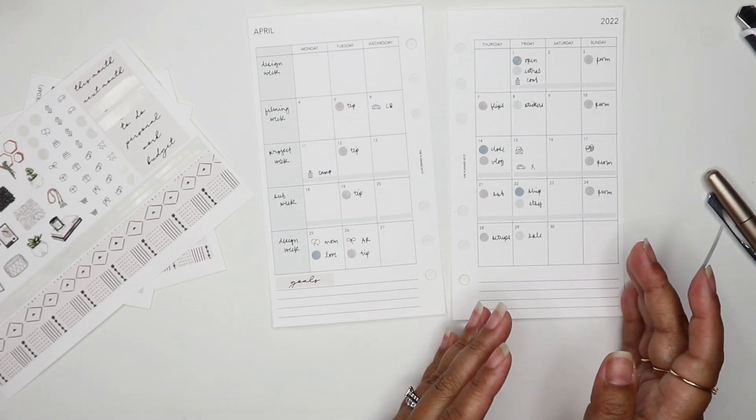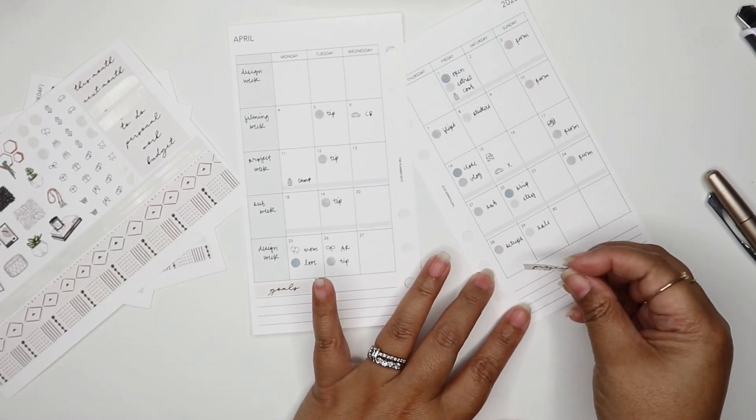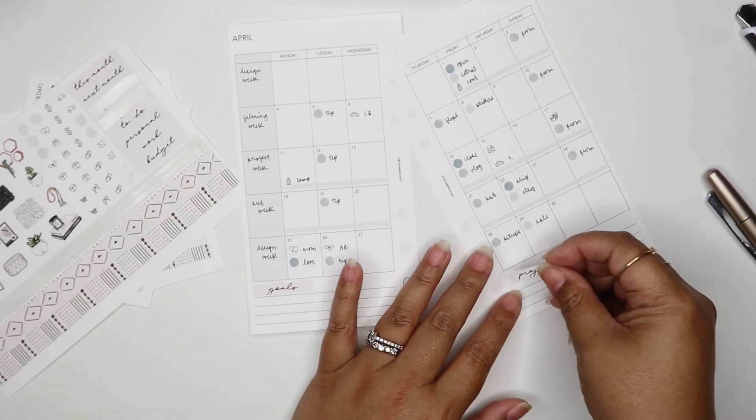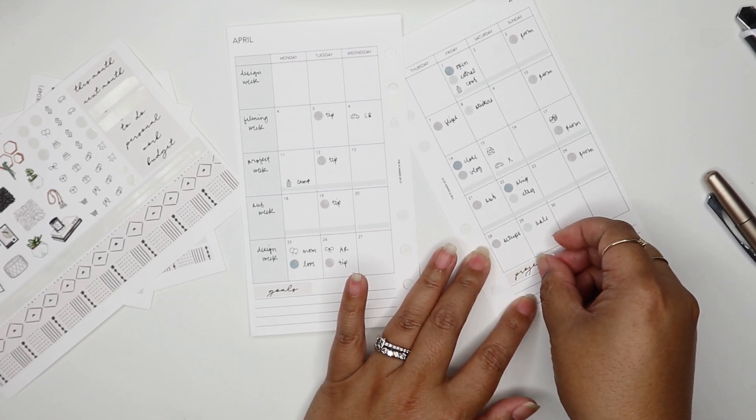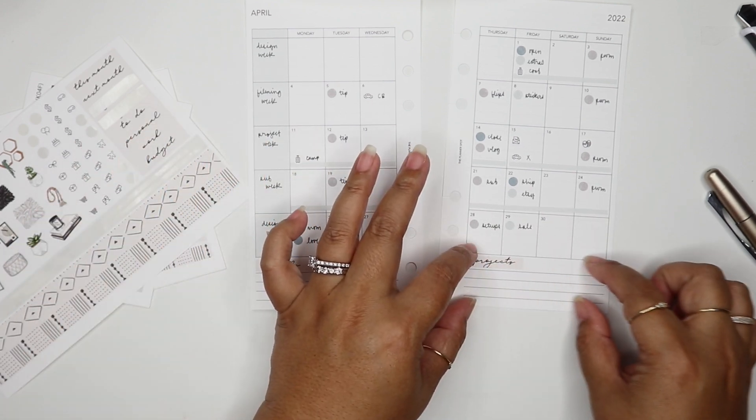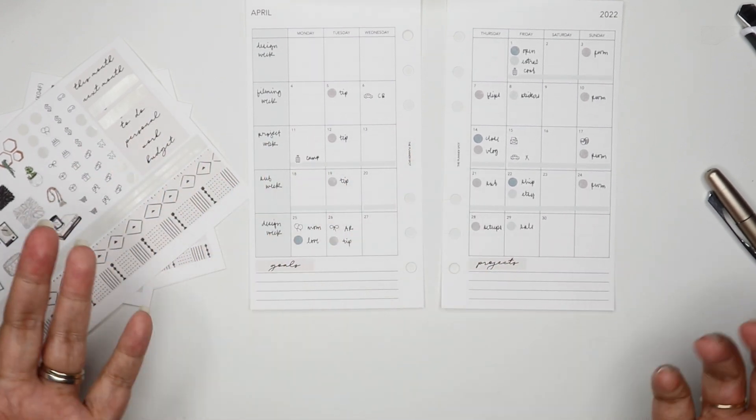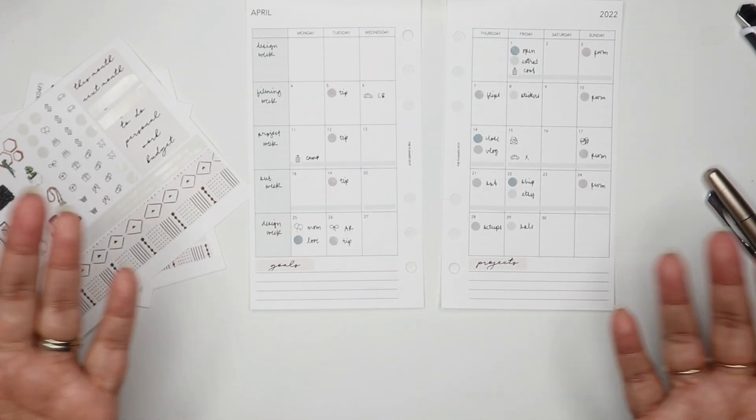For most months I think there's only four months that are like that in all of 2022, but for the other months you have lines on both the left side and the right side. I know some people were getting confused because they would go to our Etsy shop and it doesn't look the same. That's why it looks that way.